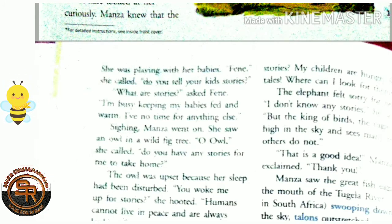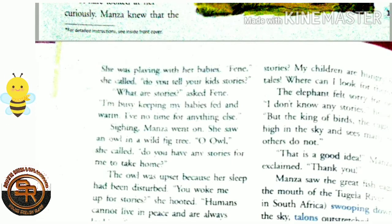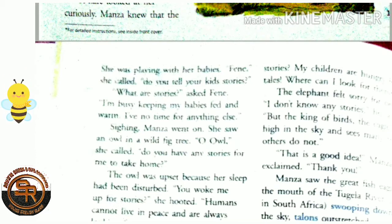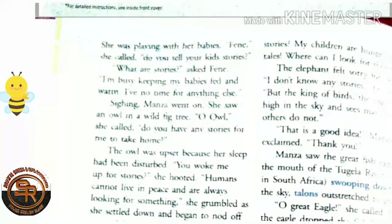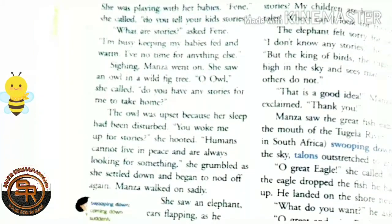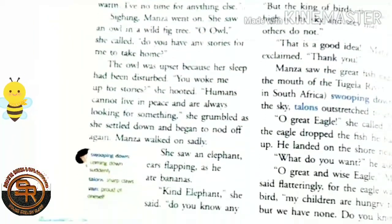Sighing, Manza went on. She saw an owl in a wild fig tree. 'Oh owl,' she called, 'do you have any stories for me to take home?' The owl was upset because her sleep had been disturbed. 'You woke me up for stories?' she hooted. 'Humans cannot live in peace and are always looking for something,' she grumbled, as she settled down and began to nod off again. Manza walked on sadly.